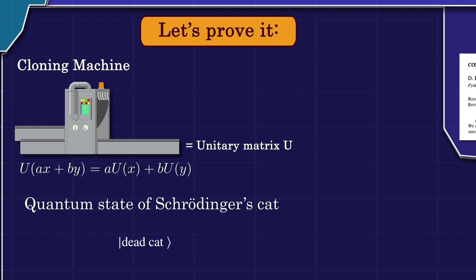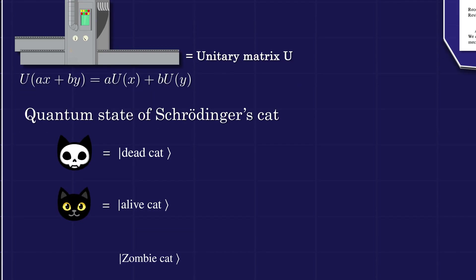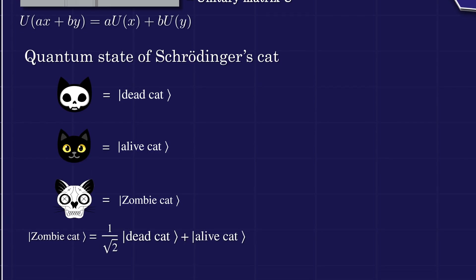We'll denote the dead, alive, and zombie cat with these weird Dirac notations. The one-half square root two indicates that the cat has a 50% chance of being alive and a 50% chance of being dead.